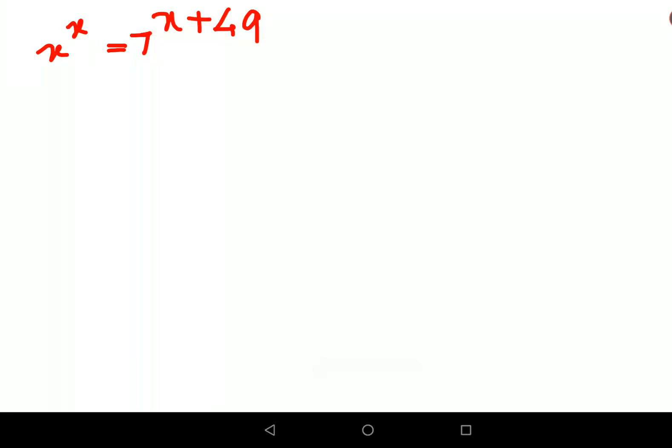Welcome everyone. So today we are trying to figure out how to solve this particular indices problem. We have x raised to x equals 7 raised to x plus 49.